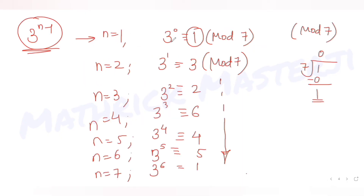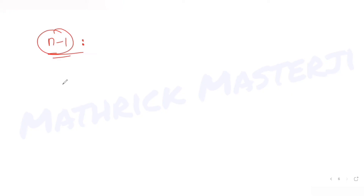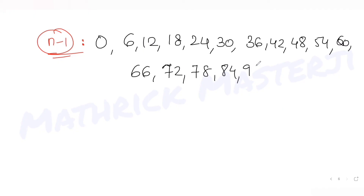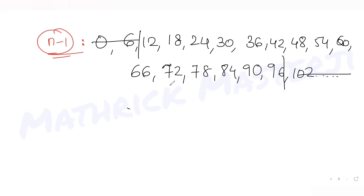From the cycle for 3^(n-1), the remainder equals 1 when the power is 0, then 6, then 12, 18, 24, 30, 36, 42, 48, 54, 60 — that is, when n-1 is a multiple of 6. We only need n from 10 to 100, so we eliminate multiples of 6 that fall outside that range. We then add 1 to all values of n-1 to get the values of n.